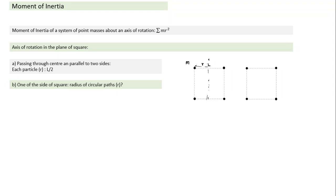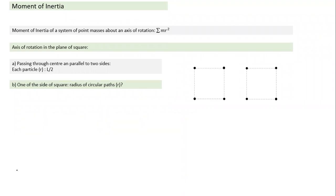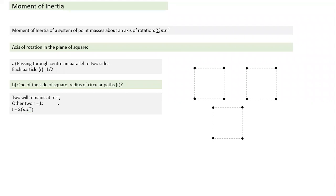Taking a second case where one side of the square is the axis of rotation: the two particles on that side have r equal to zero, while the two particles on the opposite side have r equal to l. So the moment of inertia is 2·m·l².